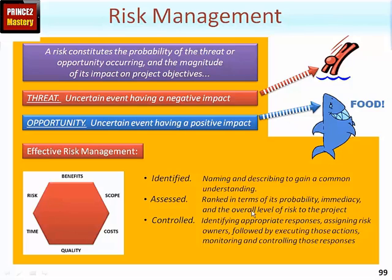Because a project will typically have many risks, we need to rank them. Controlling risks means identifying the appropriate response for each and assigning risk owners. Although the project manager is a central figure, a risk owner may be the project manager themselves, members of the project board, members of the specialist team, or any other appropriate risk stakeholder. Controlling also means monitoring responses to ensure they have the desired effect on each risk.